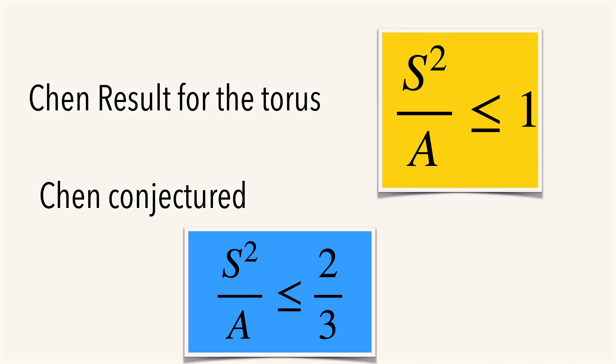In general, he showed that it's smaller or equal to one, but believes that two-thirds is the constant.